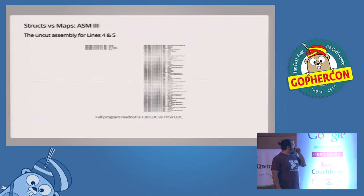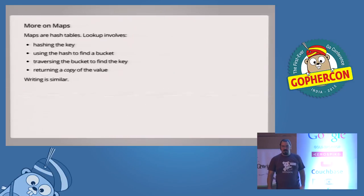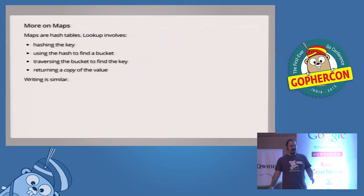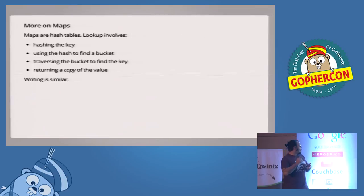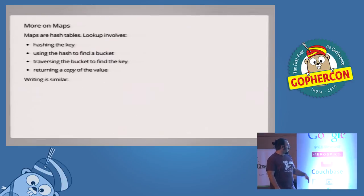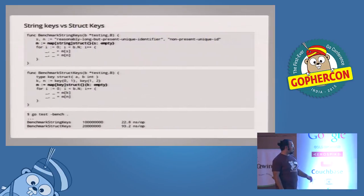A little bit more on maps — despite the fact that I'm saying use structs instead, you can't always do that because maps are actually incredibly useful. Maps are hash tables — that's not actually mentioned in the spec which calls them an unordered something, but they're hash tables. When you do a lookup you have to hash the key, traverse the buckets to find the match. Hashing the key is O(key length), traversing the bucket is O(hash bucket length), and then it returns a copy of the value. Writing is almost the same. You can look in the runtime to find the code doing that — it's pretty interesting.